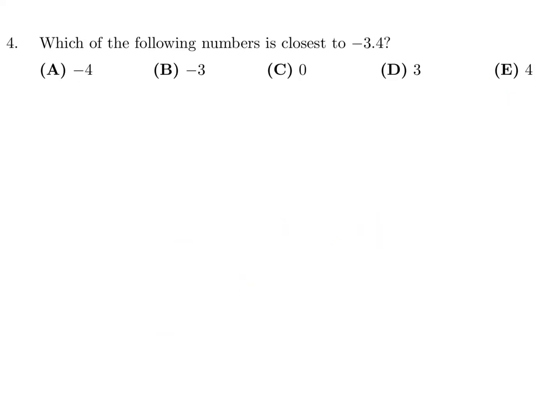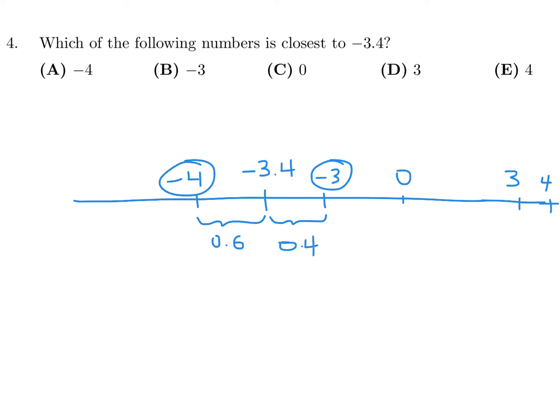Which of the following is closest to negative 3.4? So we've got a number line, and we've got negative 3.4. Negative 4 is about here. Negative 3 is here. Zero is out here. And 3 and 4 are out here somewhere. So obviously the two candidates that are closest are those guys. Negative 4 is 0.6 away. Negative 3 is only 0.4 away. So therefore this one is the closest, and therefore that would mean the answer for number 4 is B.